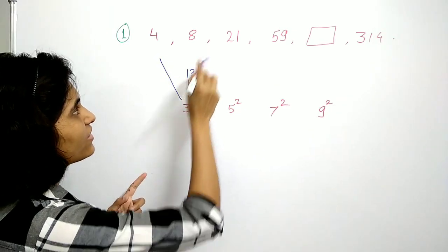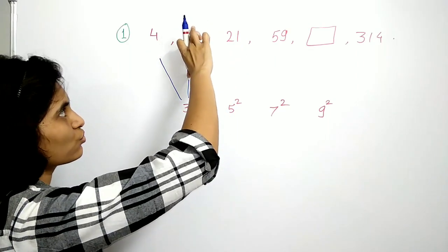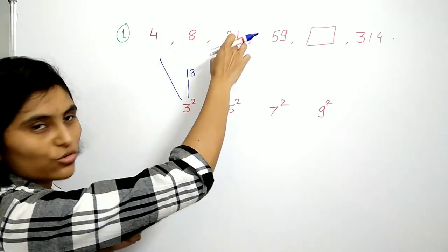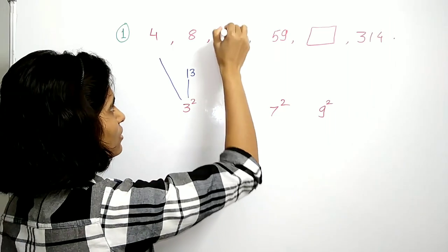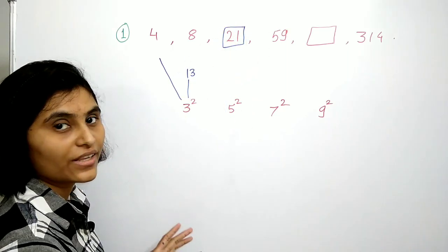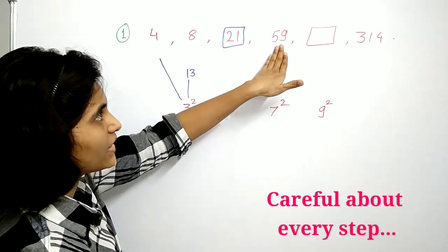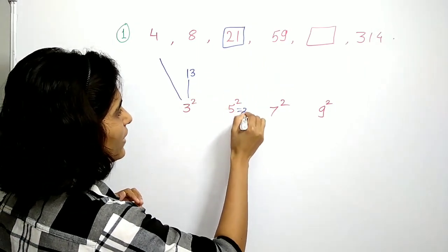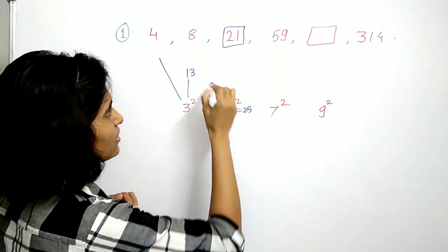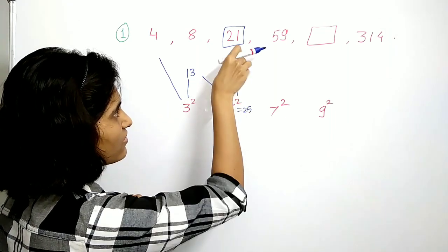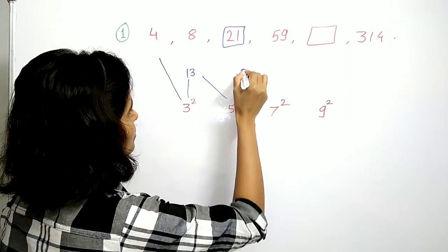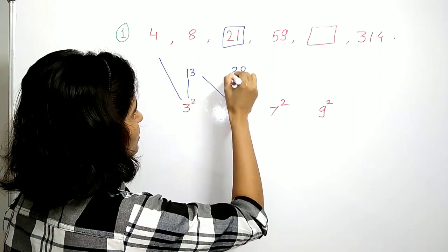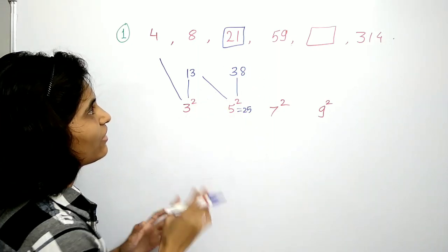Now to get this 21, you add these two numbers: 8 plus 13 gives us 21. Now to get 59, we have to add these two numbers: 25 plus 13, which gives us 38. So write the resultant over here, which is 38.